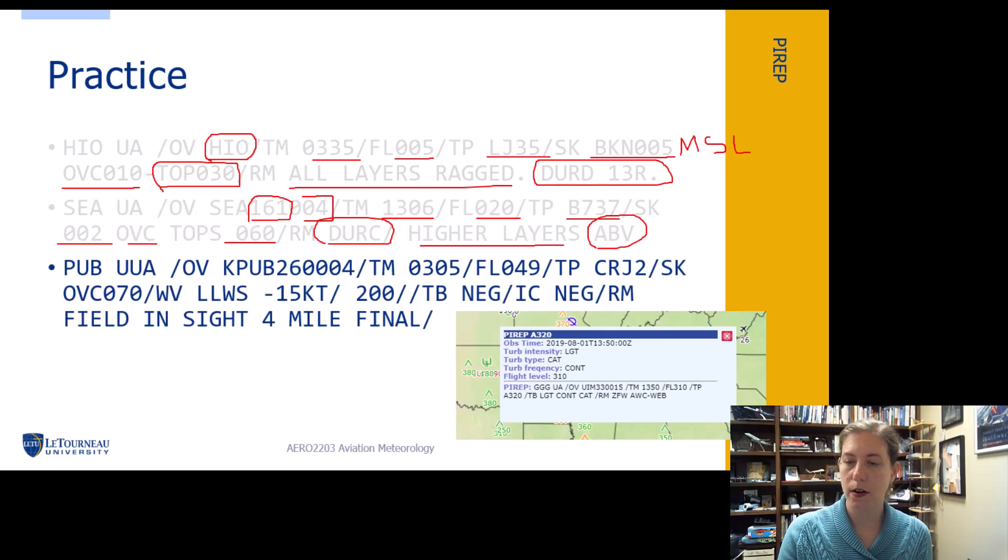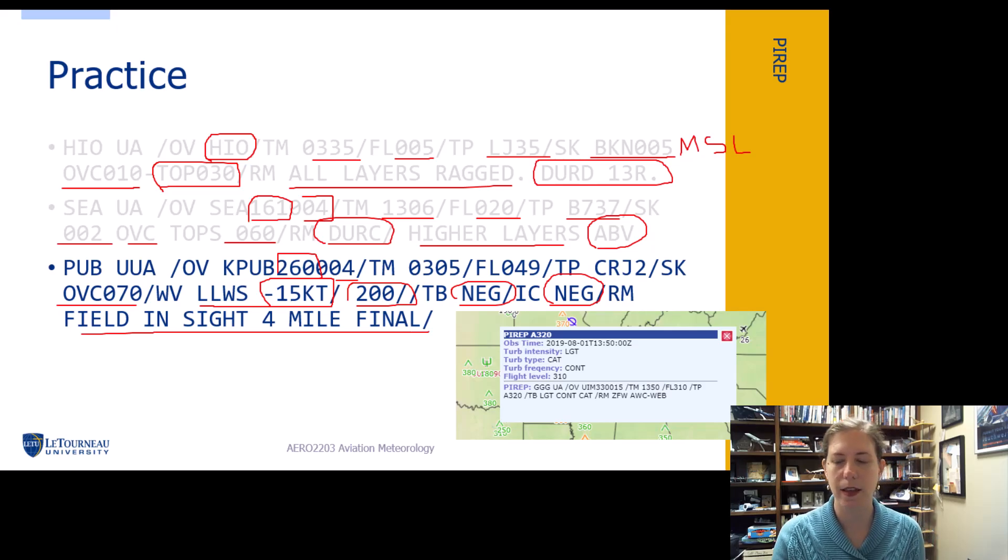Got another one here. This is at Pueblo, Colorado, I think, on the 260 degree radial at four nautical miles. We have overcast clouds at 7,000 MSL. And we have some other information about wind here. Low level wind shear, they lost 15 knots. I think this part's a typo, it's a little hard to say sometimes. No turbulence. It's a little odd that they're saying they had the wind shear, but they didn't have turbulence. Turbulence was forecast but not present. Icing was forecast but not present. And they got the field in sight on four mile final. So it's kind of like that plain language report.